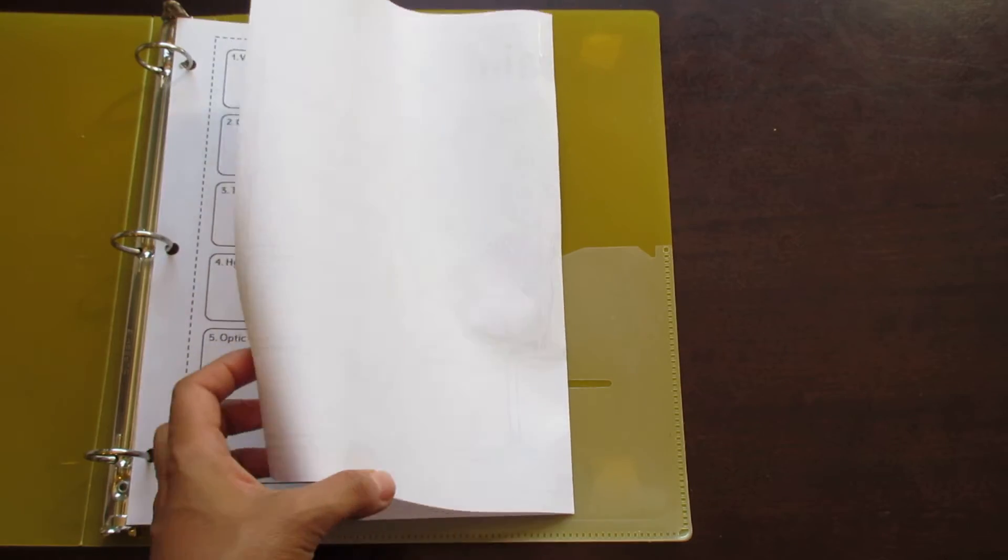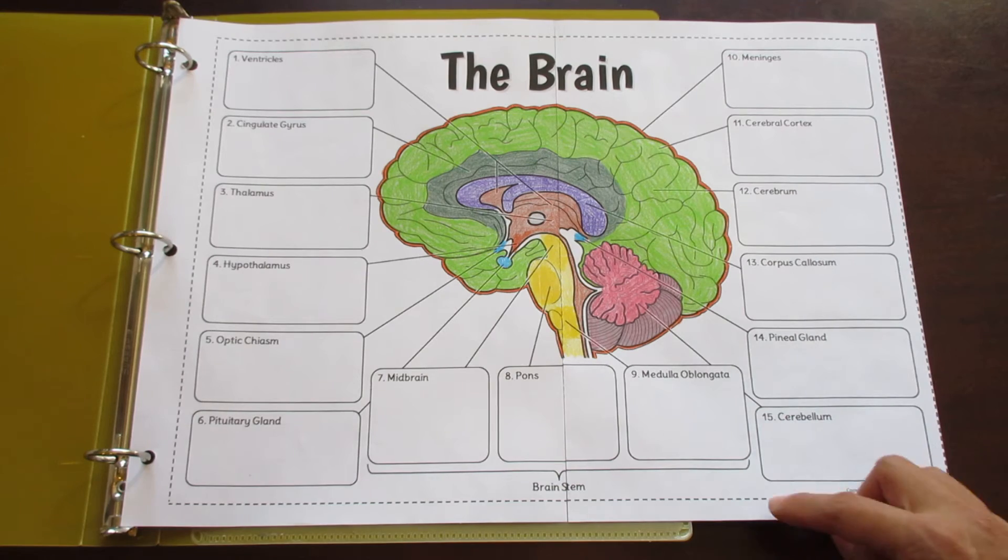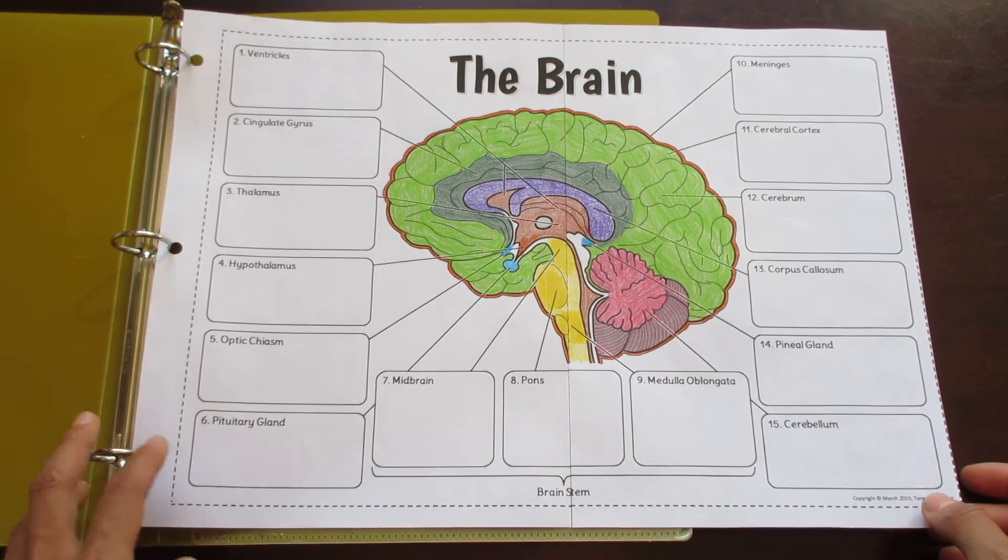If you want to use these foldables in an interactive notebook, all you would do is cut along the seams, these dotted lines here, in order to create a smaller foldable.